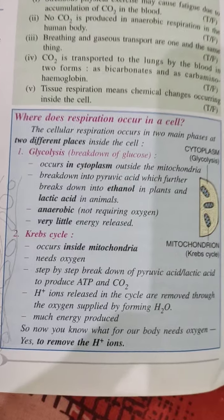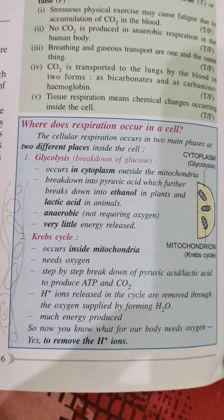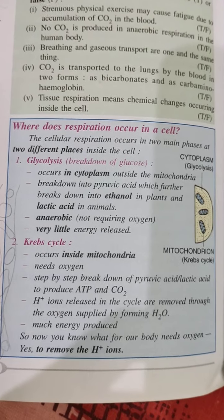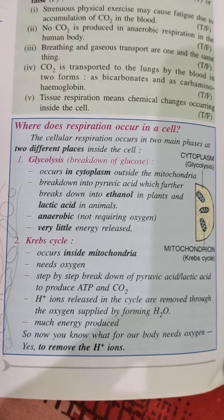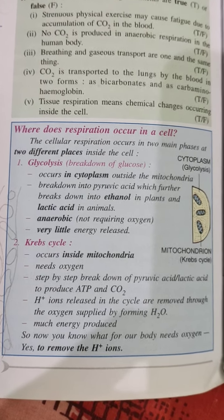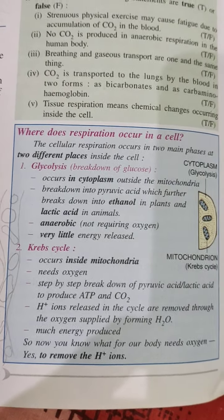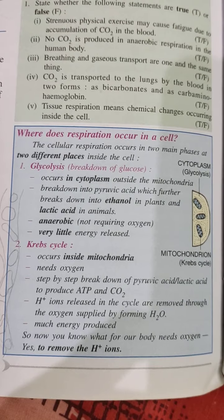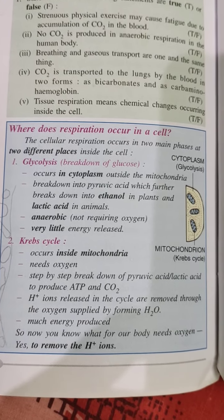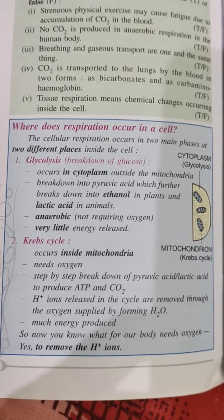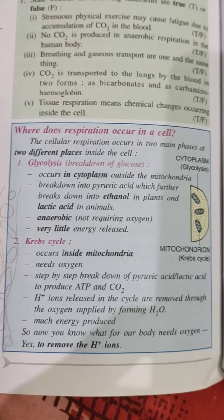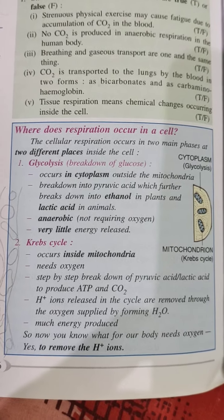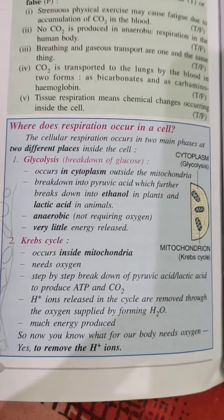The next phase is the Krebs cycle, which occurs inside the mitochondria. It needs oxygen. There is a step by step breakdown of pyruvic acid or lactic acid to produce ATP and CO2. The H+ ions released in the cycle are removed through the oxygen supplied by forming water, and much energy is produced. Now you understand why our body needs so much oxygen — to remove the H+ ions. These two phases of cellular respiration are very very important.